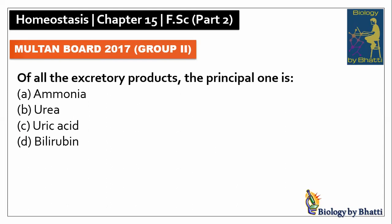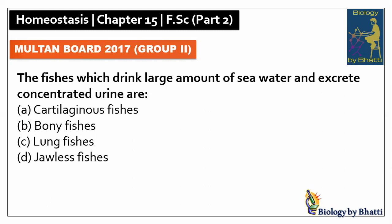Multan Board 2017 Group 2: among all excretory products, the principal one — this is also a textbook statement — so the answer was B option. In this paper, the fishes which drink large amounts of sea water and excrete concentrated urine are bony fishes, so the answer was B option.